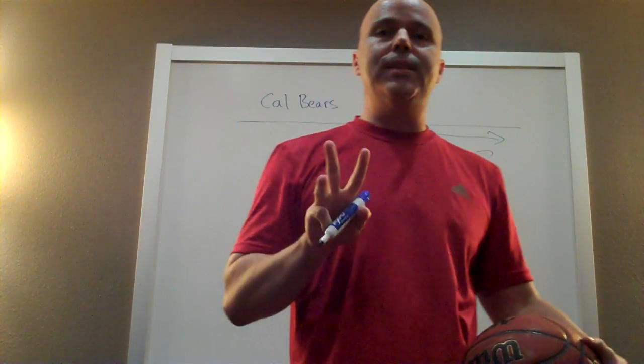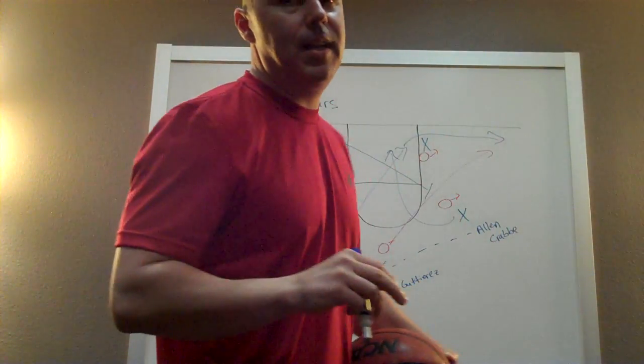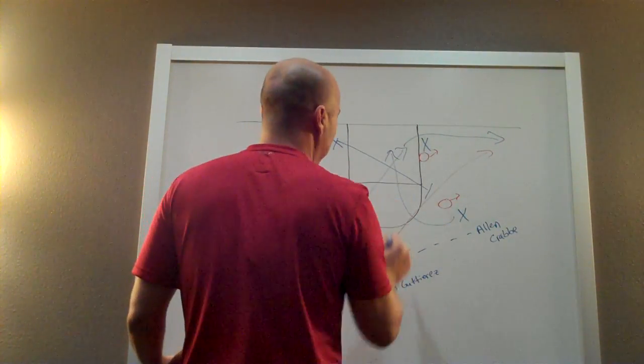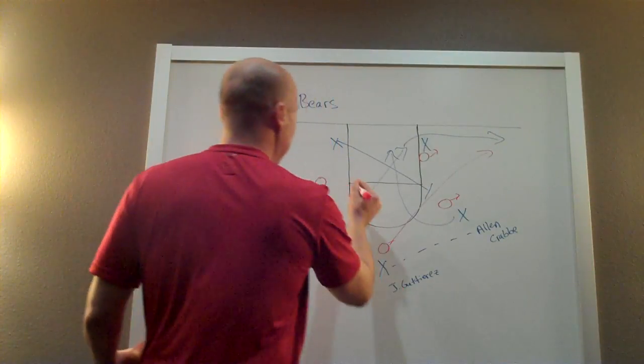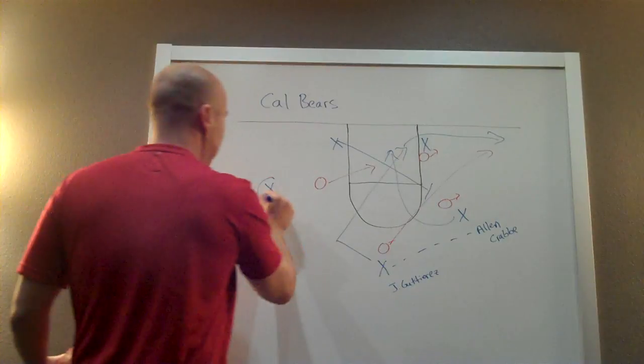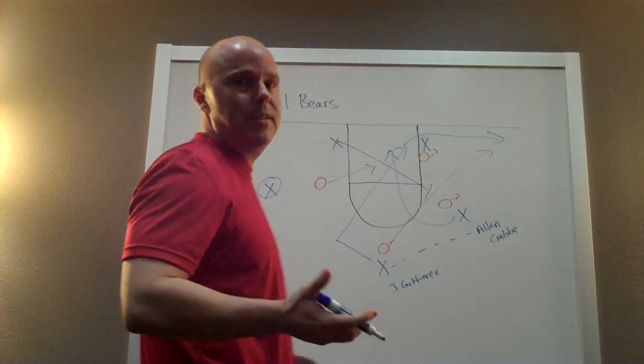This happened three times in the Stanford game on Sunday, a game that Cal won. Now on the fourth time they ran it, Crabb still got into the lane, but the weak side guard came in to help and Crabb kicked out to this guy here who made the three pointer.